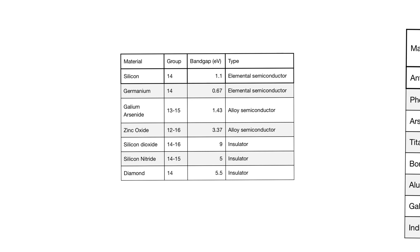If we look at this table, it shows us a bunch of semiconductors and insulators. We have silicon and germanium, which are elemental semiconductors, meaning they are formed of a single element. And we have gallium arsenide and zinc oxide, which are compound semiconductors, meaning they are formed of a compound of two materials together.